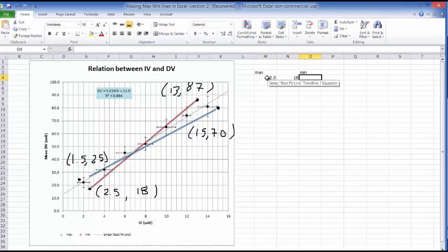And then I do the same thing for the minimum points. That's 2.5, sorry, that's 1.5 and 25, followed by 15 and 70, 15 and 80.